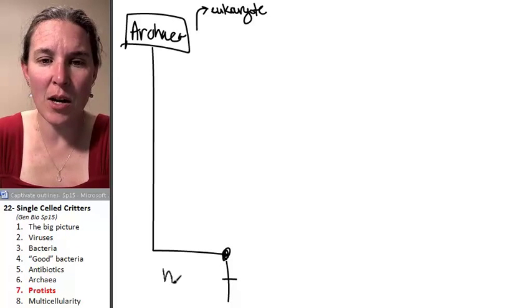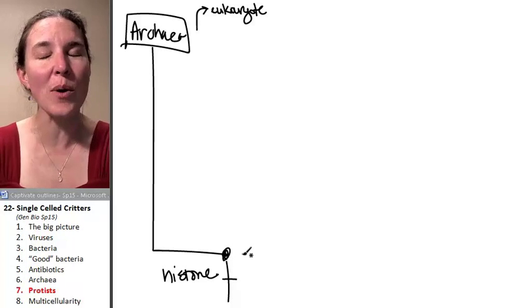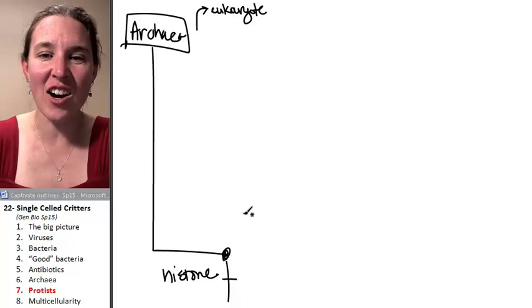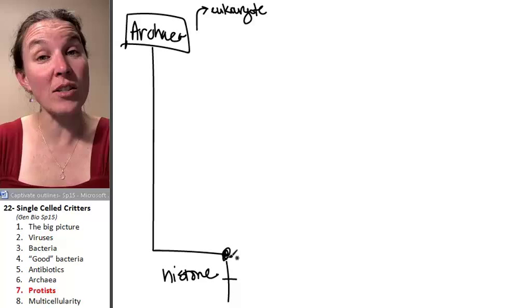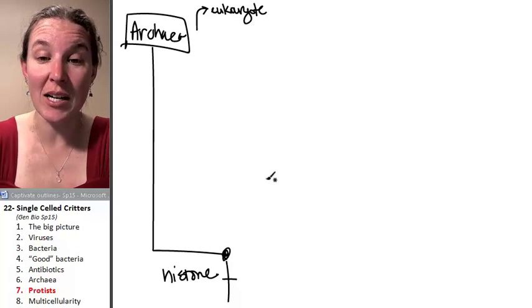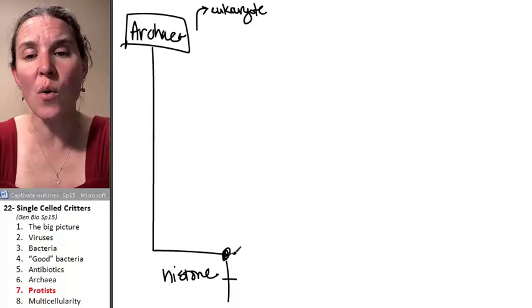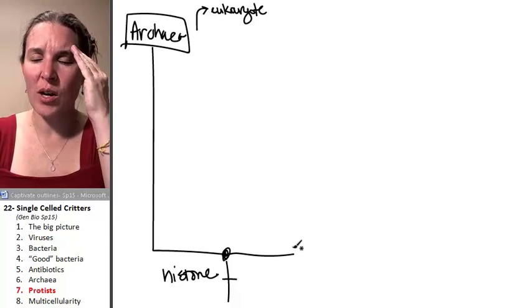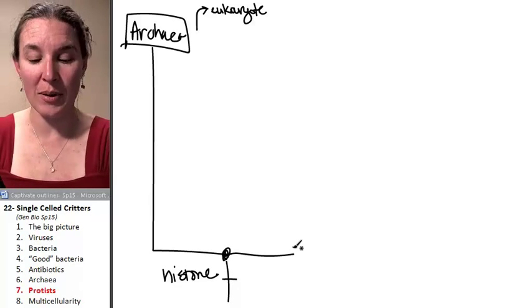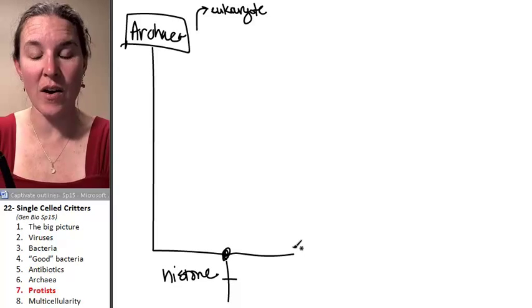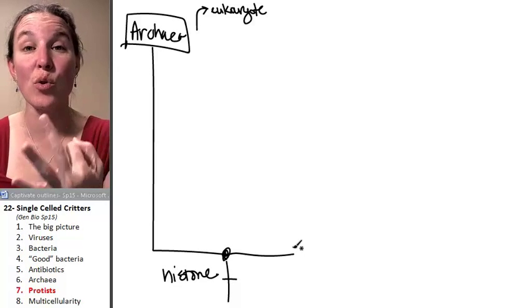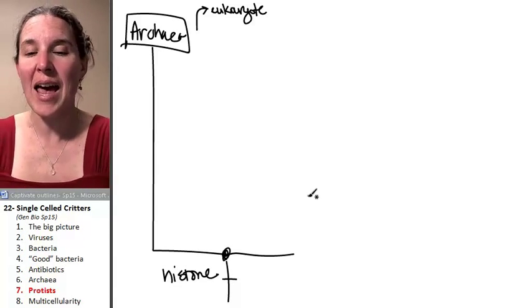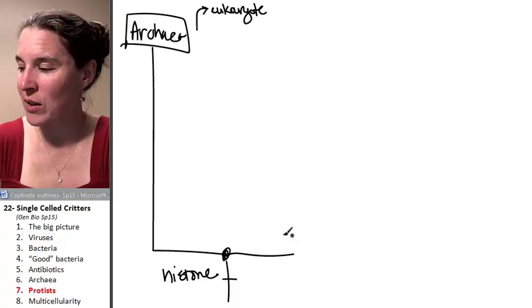everybody beyond here is going to be a eukaryote. Everybody beyond here has histone proteins and that's what distinguishes. That's how we know that Archaeans are more closely related to eukaryotes than they are to bacteria. So I'm going to show you, hopefully in your brain, you are aware that we've got plants, we've got fungi, and we've got animals and those are three big groups of eukaryotes. And I want to show you how they're kind of related to each other.